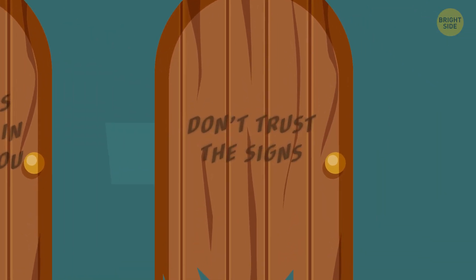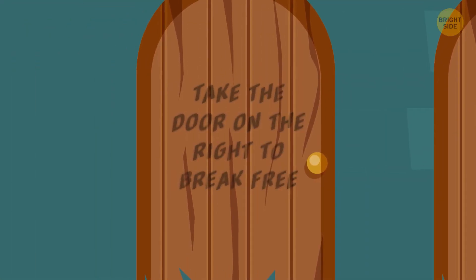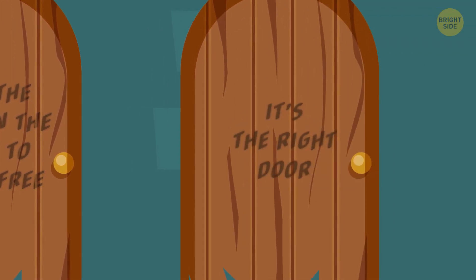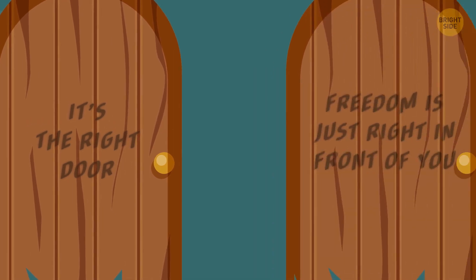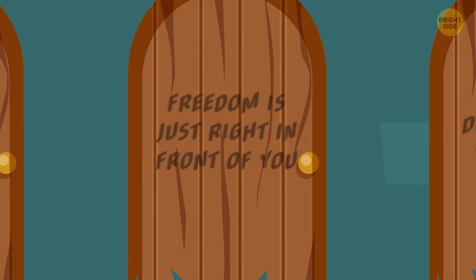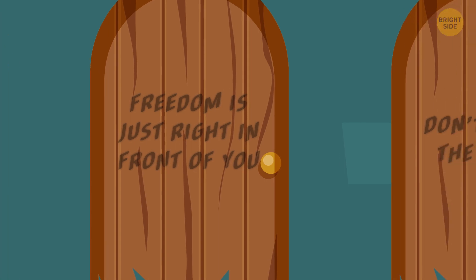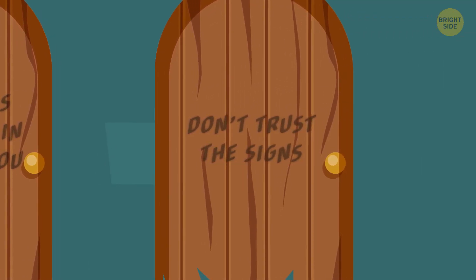The last door. It says not to trust the signs, but it doesn't mean that they're lying. The first door says to take the door on the right. Not necessarily the last door on the right, but just the one on the right. The second one says, it's the right door. Not the correct door, but the right door, as in the door on the right. The third door says freedom is just right in front of you. That just doesn't make any sense, does it? So it's the last door on the right that leads to freedom.